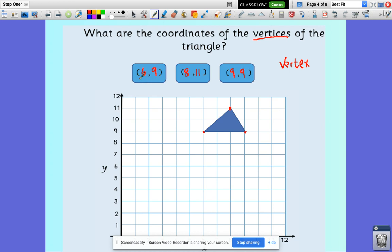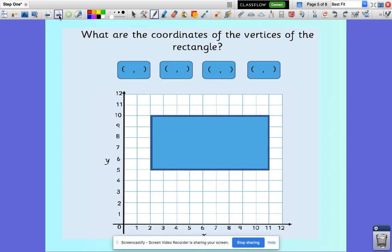So really important. The first number is always the one that's along the x-axis, along the corridor. The second number is the number that is on the y-axis. So what are the coordinates of the vertices of the rectangle? The rectangle obviously has four vertices, four corners. So we need to find the coordinates of each of those. So we'll start with this one. So we go along the x-axis to 2, and go up, and we get to 5 on the y-axis. So (2, 5).